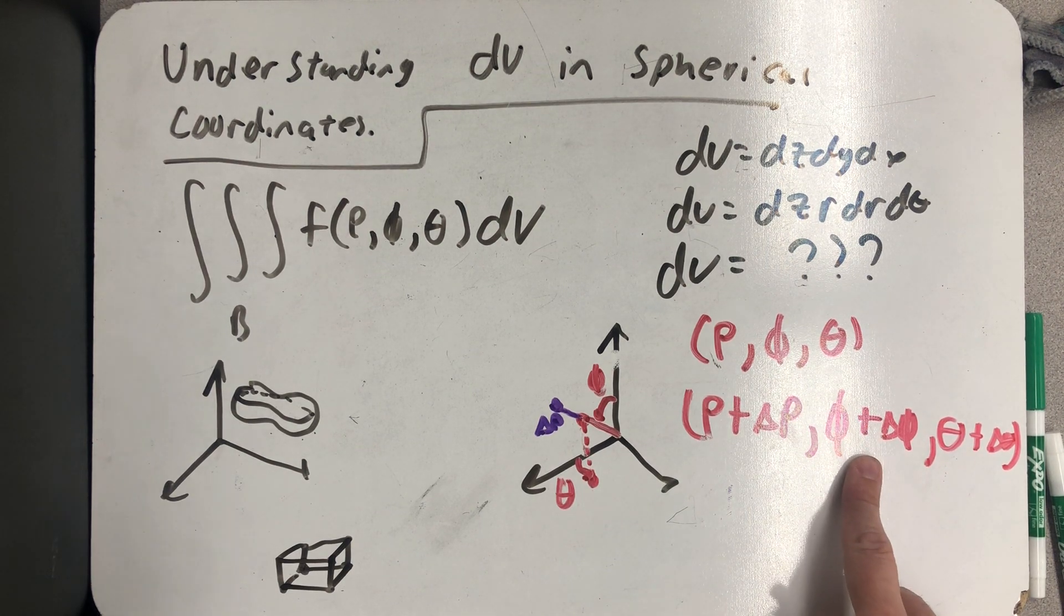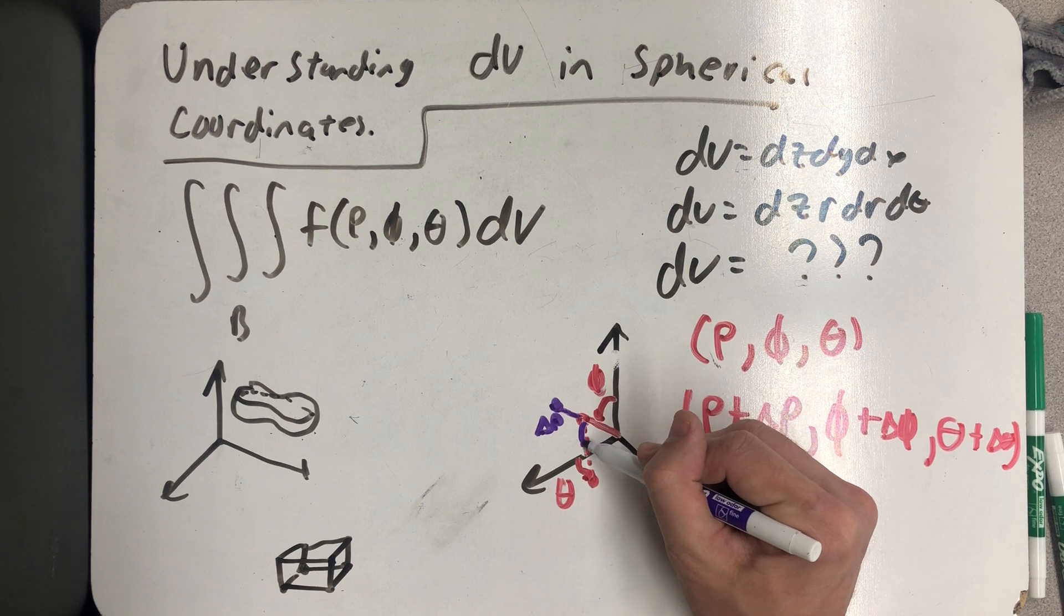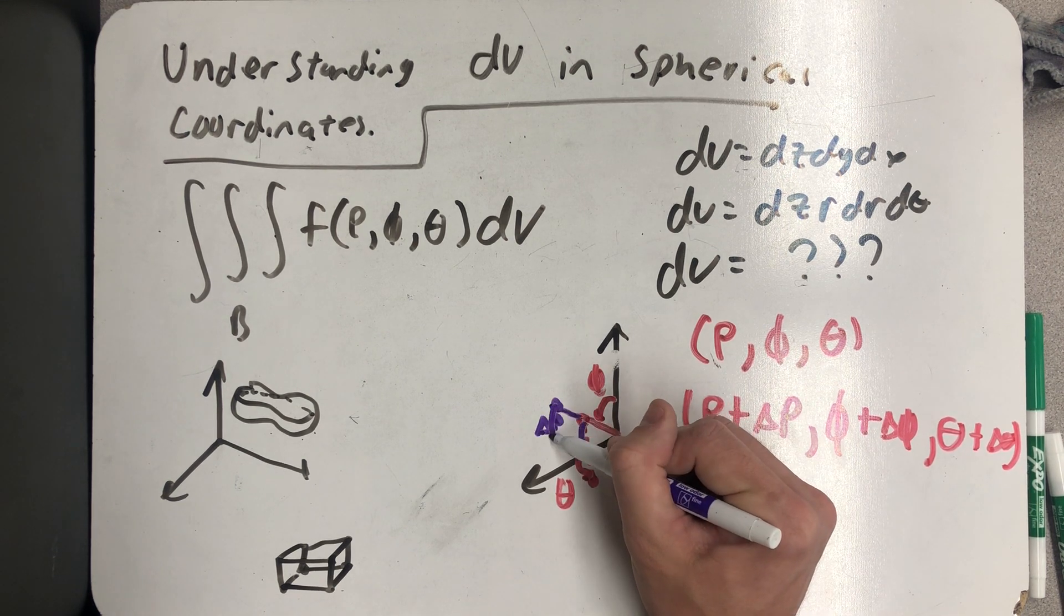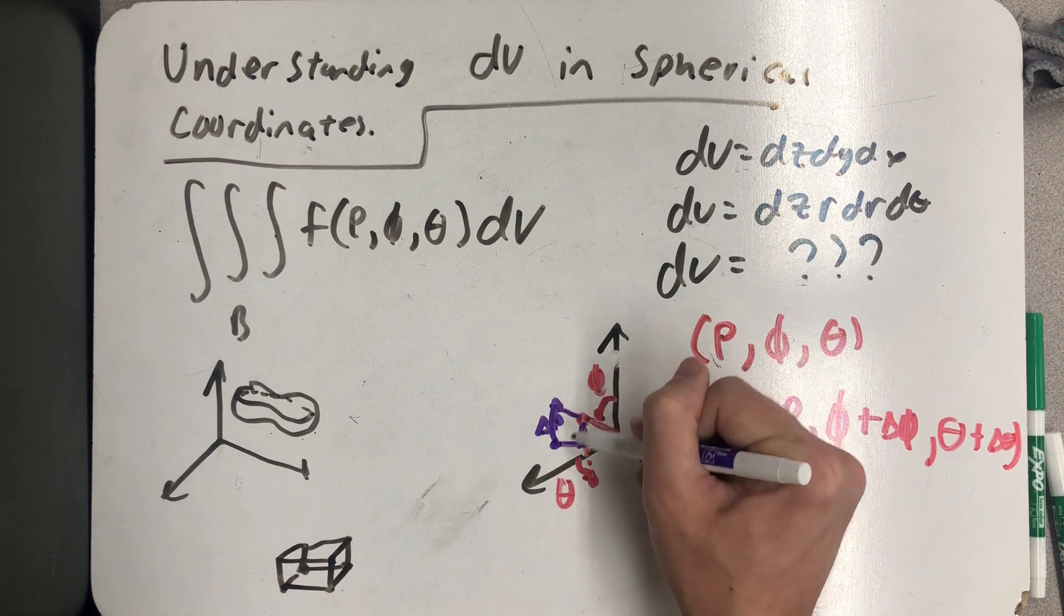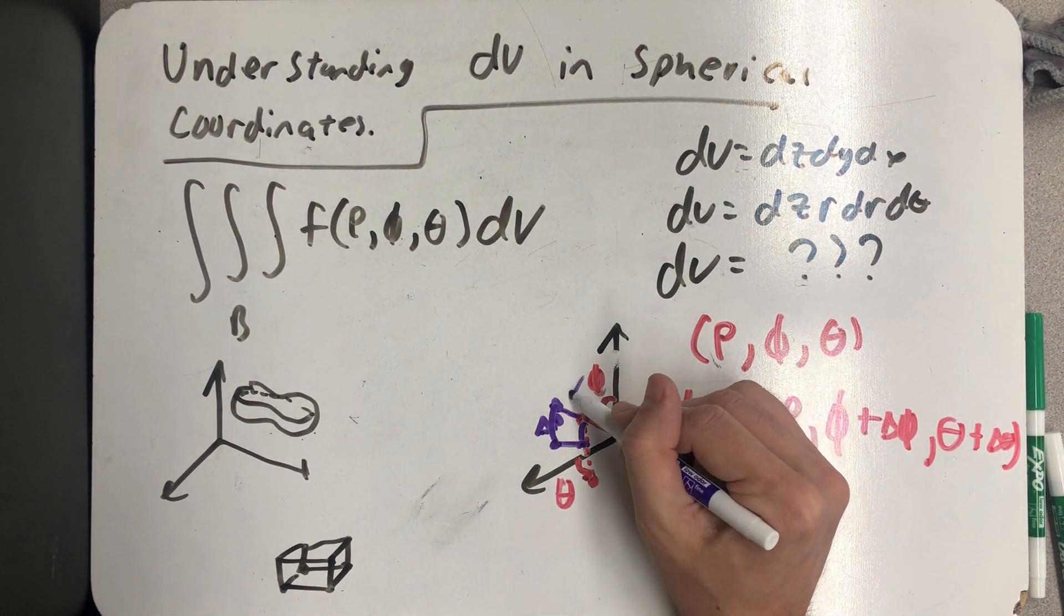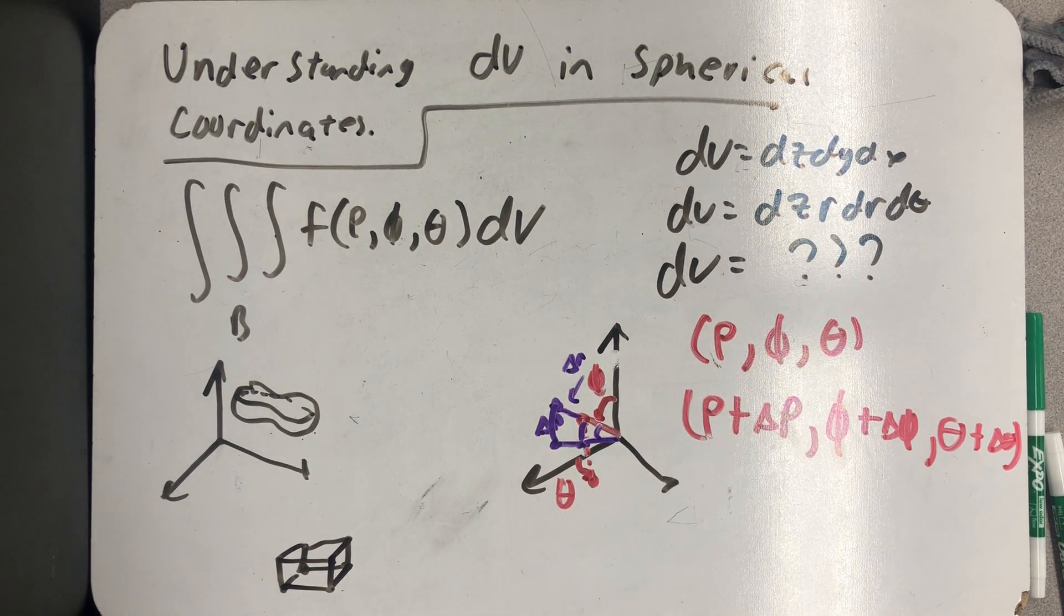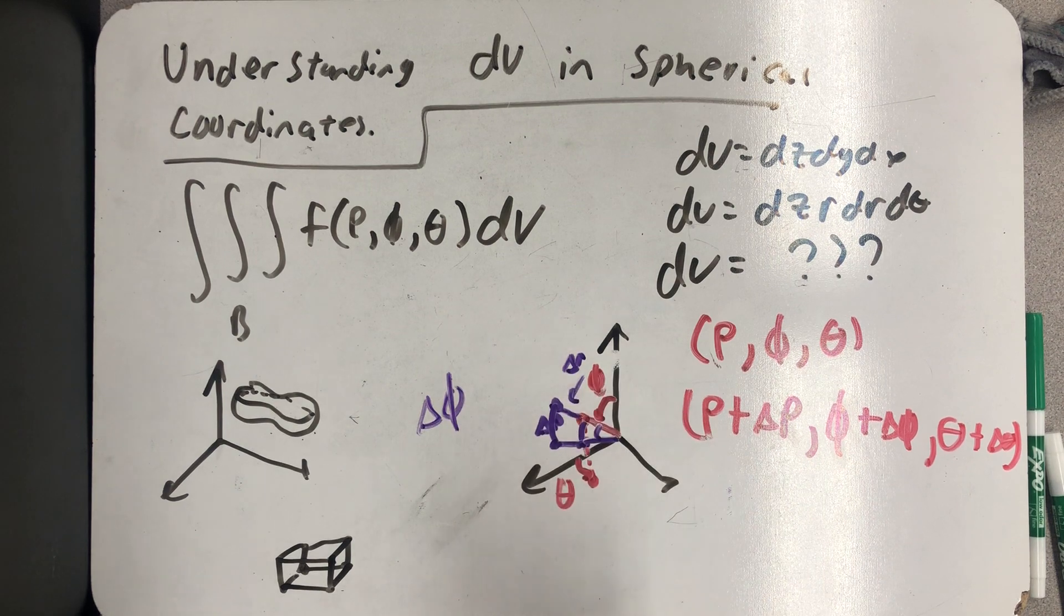Now let's change the angle φ just a little bit. That means I would rotate down, right? And so this point would rotate down, and I'd get a little arced sector there. All right, so this was Δρ, and now I have an angle here, and that little angle in there is Δφ.